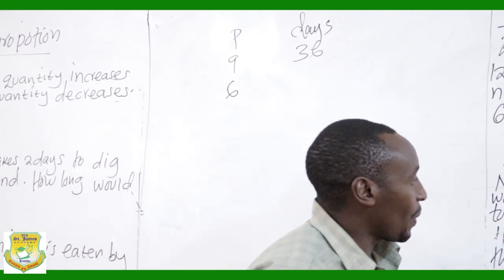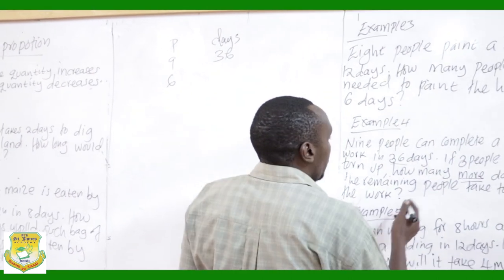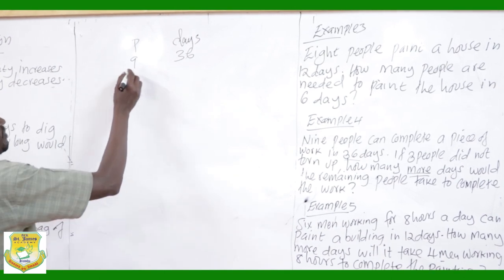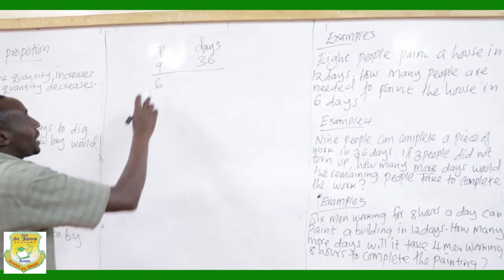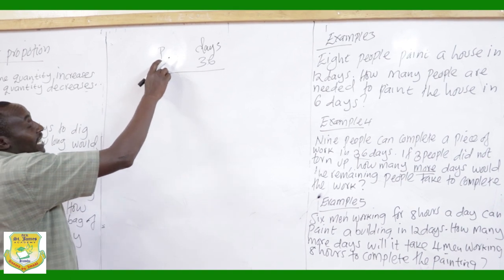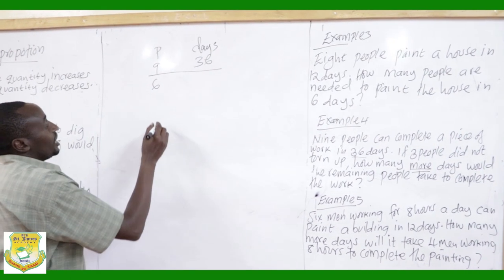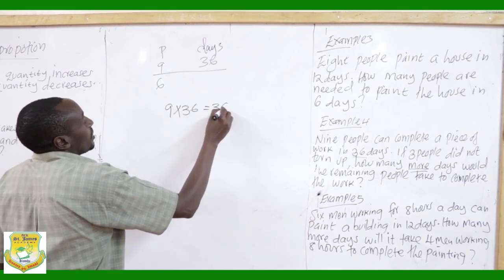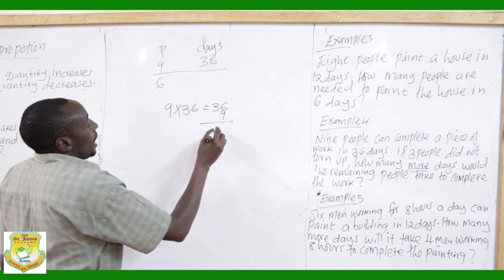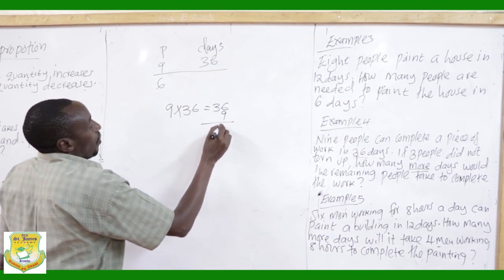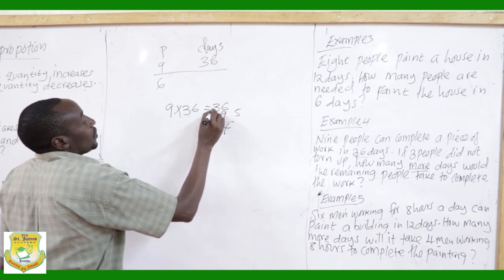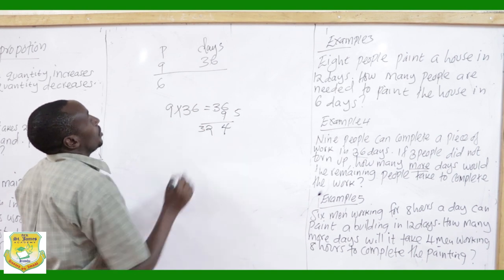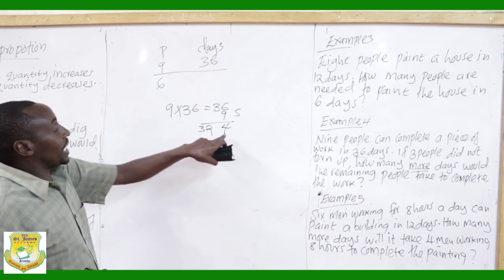How many more days would the remaining people take to complete the work? We give the work to one person. Initially it was planned for 9 men to take 36 days, so we take 9 times 36. Nine times 36 gives 324. This is the total amount of work, expressed as the number of days for one person.